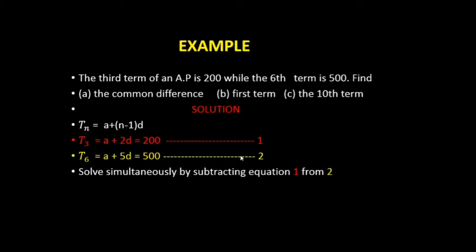Now we have formed equations 1 and 2, which can be solved simultaneously. Solve by subtracting equation 1 from equation 2. That gives us: a - a = 0, 5d - 2d = 3d, and 500 - 200 = 300.